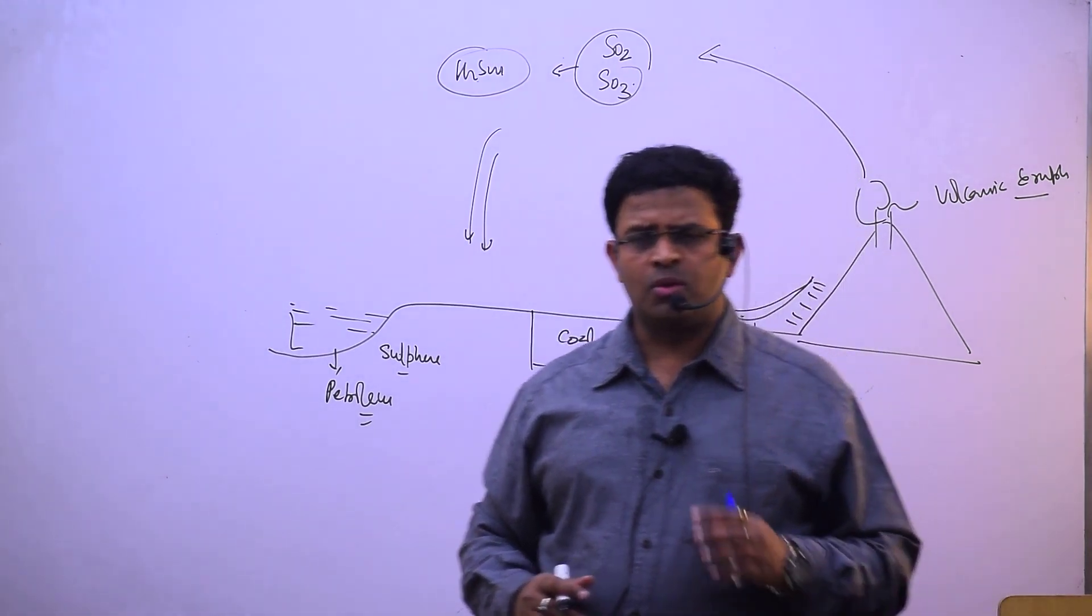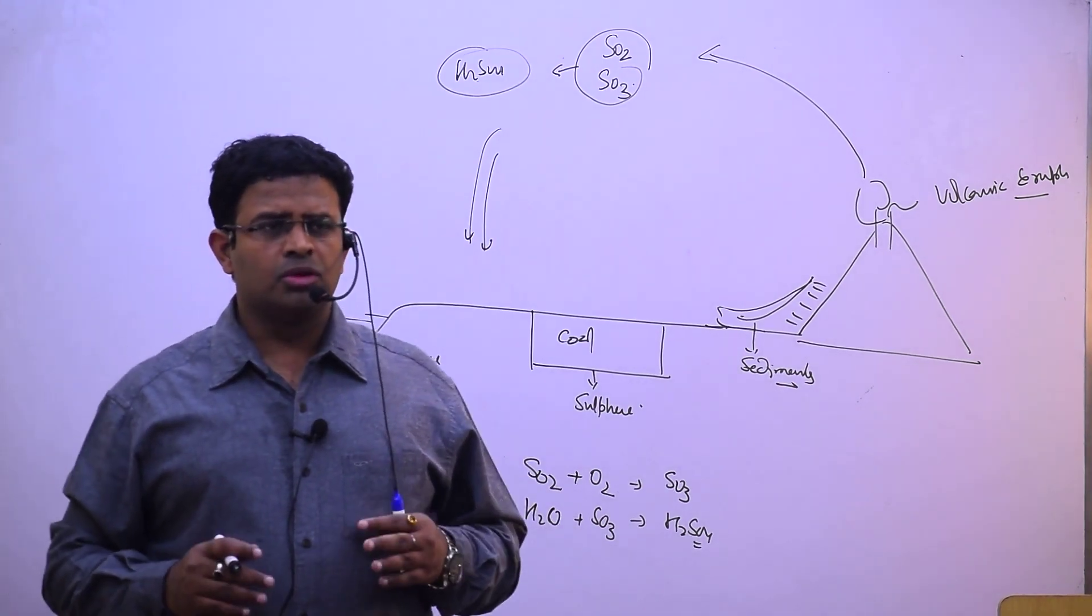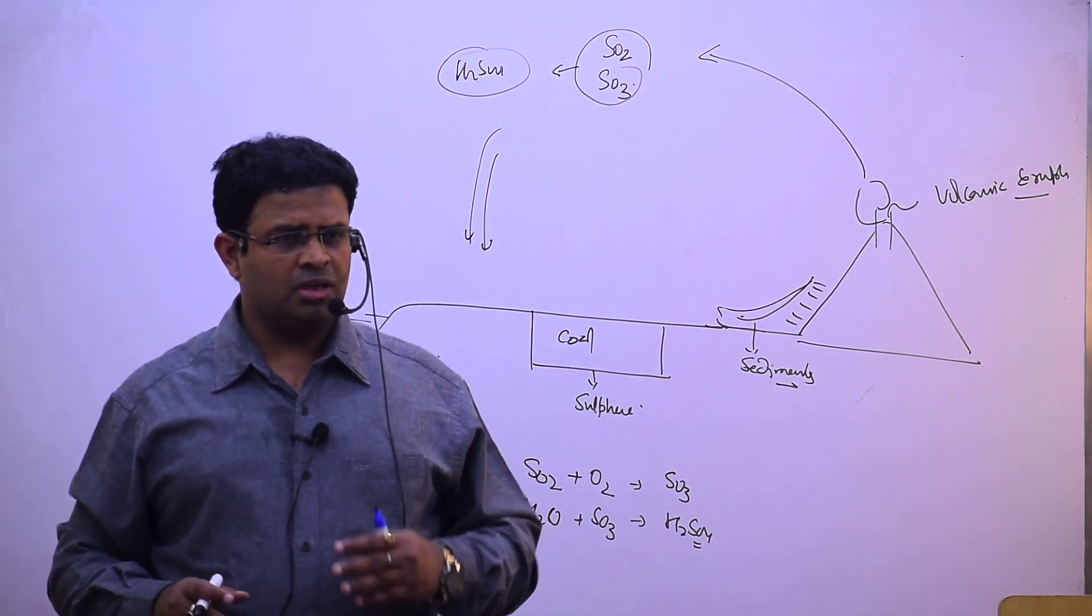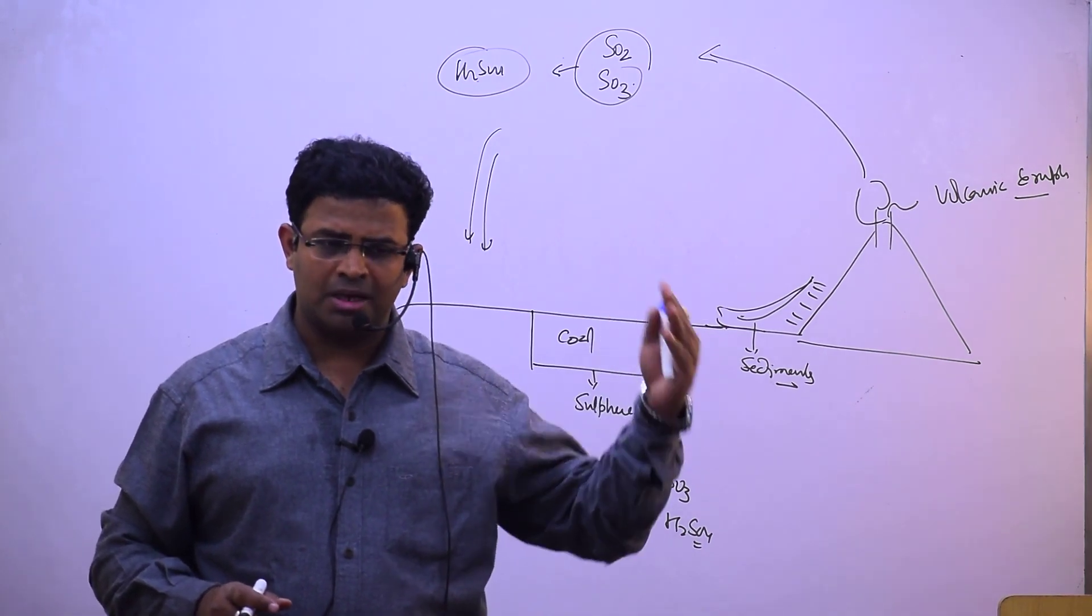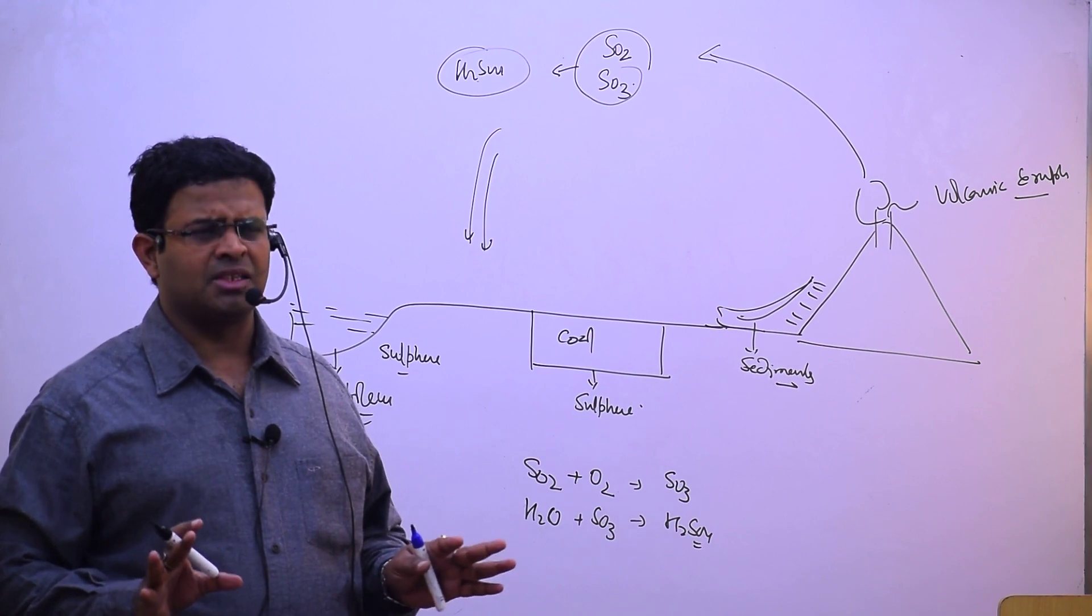Through volcanic eruption, sulfur goes into the sediments and then into the atmosphere, and then comes back into the soil through acidic rainfall.